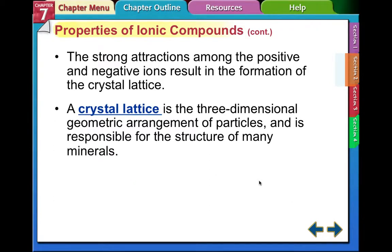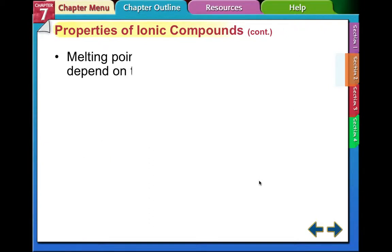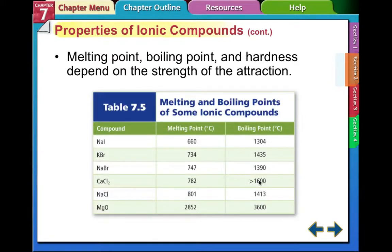The strong attraction among the positive and negative ions results in the formation of what they call the crystal lattice. The crystal lattice is a three-dimensional geometric arrangement of particles and is responsible for the structure of many minerals. You probably studied this when you studied rocks and minerals in earth science. The melting point, boiling point, and hardness depend on the strength of those attractions.